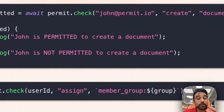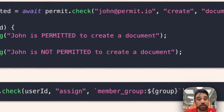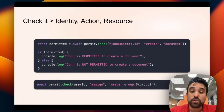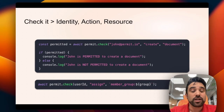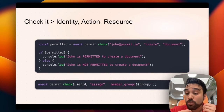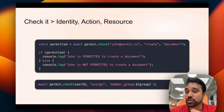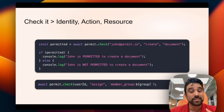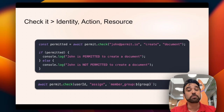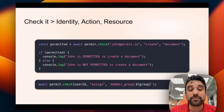Whether you use Permit or not, in the end of the day it's good to have good abstraction layers. Think about implementing a permission check in identity, action, and resource. Once we think in identities, actions, and resources, we can break our code and connect it to our policy very easily.